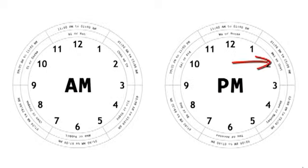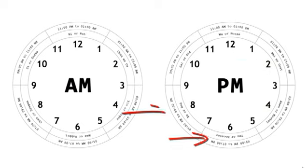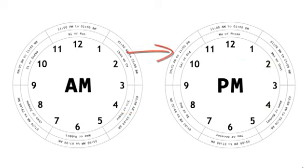Then comes wei, shen, yu, shi, and finally hai shi. This ends the 12 time periods, or shi, for the day.